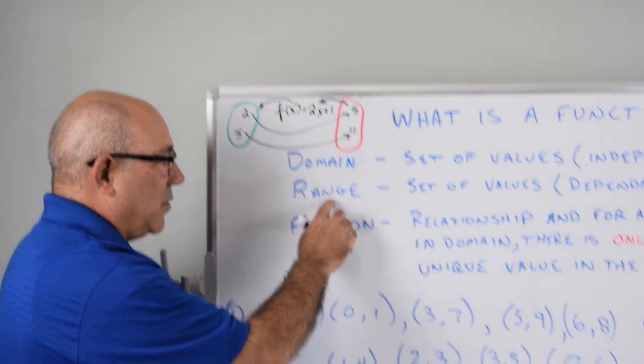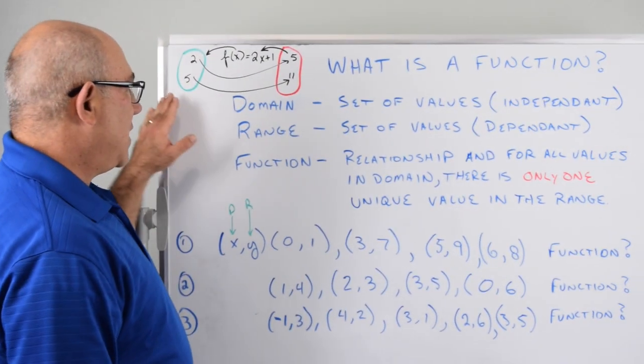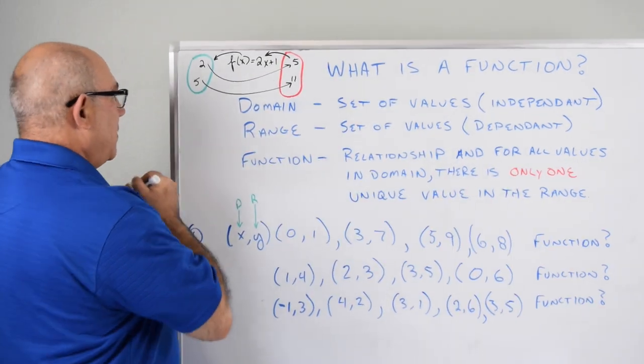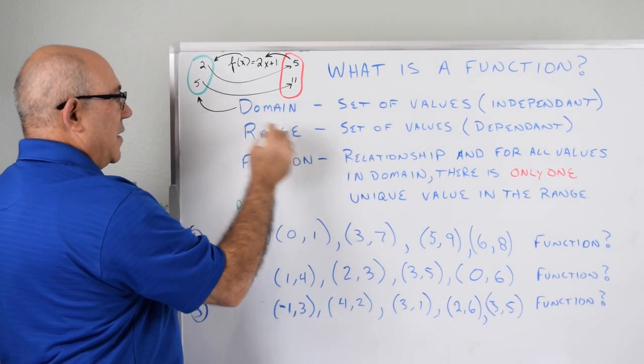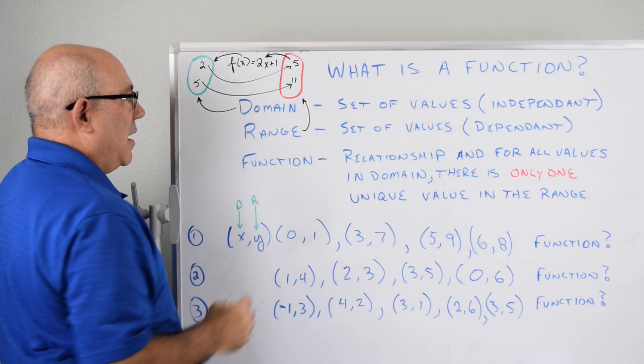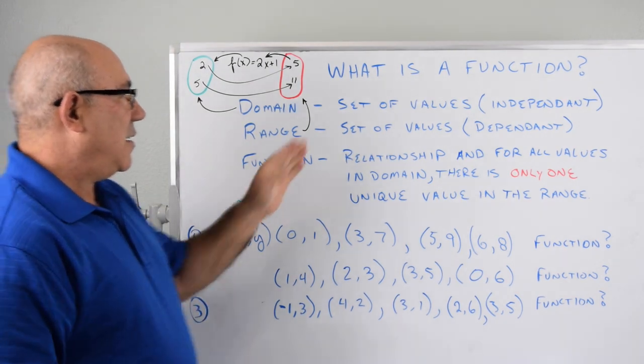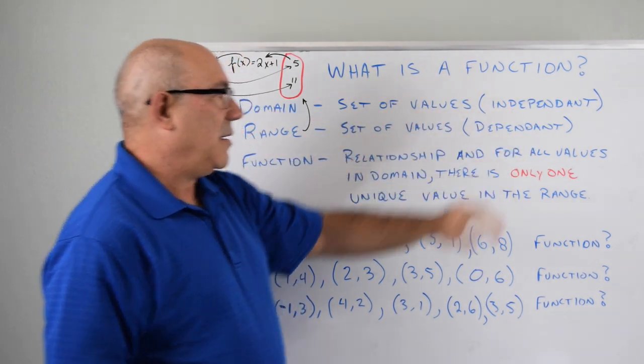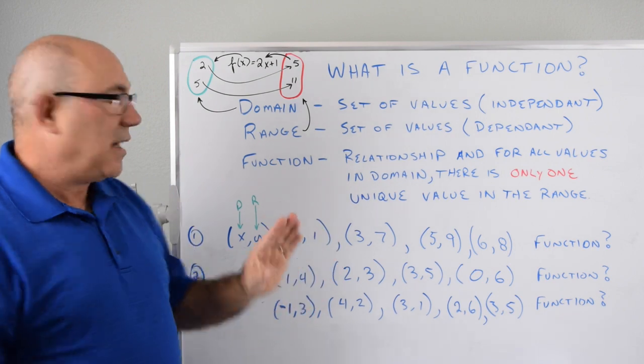And so we have to define the domain and the range. And in this case, this would be the domain and this would be the range. And the domain is a set of values that are independent. They're independent of the function. They're just there. These values don't know they're getting plugged in here.